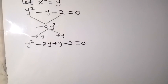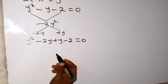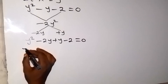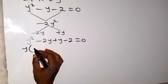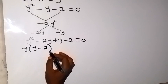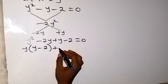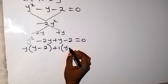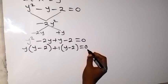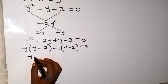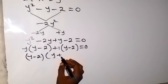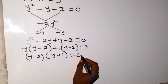So we group this in 2 and factorize the common term. In the first two terms, y is common, so we bring y out and we have y minus 2. Then 1 is common in the remaining terms: plus 1 into y minus 2, equals to 0. So y minus 2 is common. We have y minus 2, times y plus 1, which equals to 0.